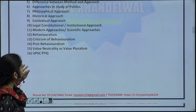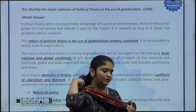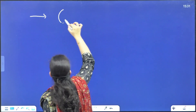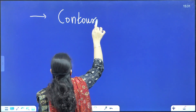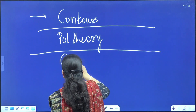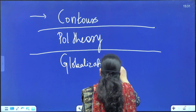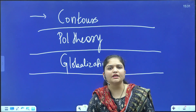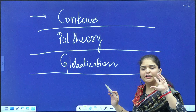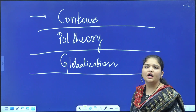Now let's see how it has been growing. I have asked a very open-ended question: identify the major contours of political theory in the era of globalization. The question is asking — contours means what are the boundaries, the areas, the scope of political theory in the era of globalization. So first, the very traditional notion, the very basic concept of political theory, and how it has come about.